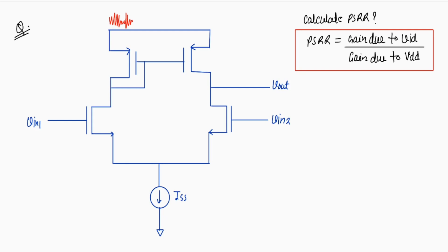Power supply rejection ratio is gain due to differential input divided by gain due to delta VDD variation in power supply. So gain due to this delta VIN to the output, divided by gain due to the power supply variation to the output.